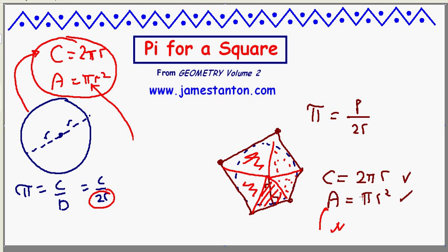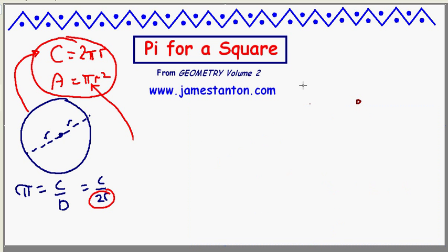So, pi for a square, pi for a triangle, pi for a regular octagon, regular 57-gon, go for it. Here's my additional piece of homework. I guess this video is nothing but challenges for you.